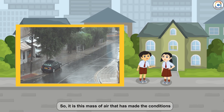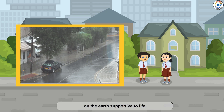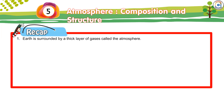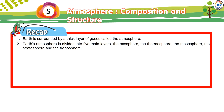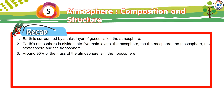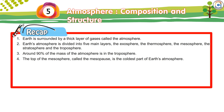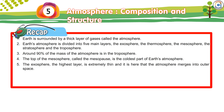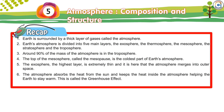So it is this mass of air that has made the conditions on Earth supportive to life. Recap: Earth is surrounded by a thick layer of gases called the atmosphere. Earth's atmosphere is divided into five main layers: the exosphere, the thermosphere, the mesosphere, the stratosphere, and the troposphere. Around 90% of the mass of the atmosphere is in the troposphere. The top of the mesosphere, called the mesopause, is the coldest part of Earth's atmosphere. The exosphere, the highest layer, is extremely thin and it is here that the atmosphere merges into outer space. The atmosphere absorbs heat from the sun and keeps it inside, helping the Earth to stay warm — this is called the greenhouse effect.